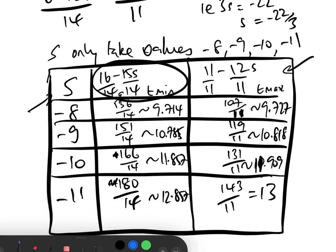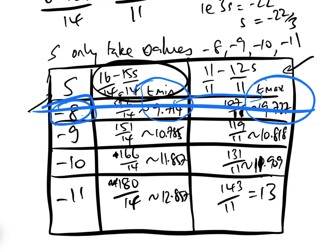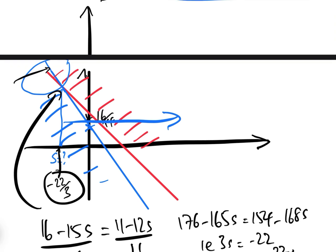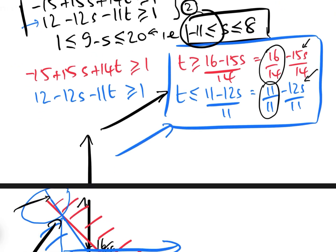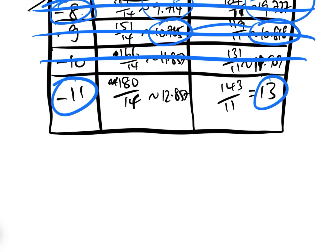The only value of s for which there is an integer value of t satisfying both constraints is s = −11 and t = 13. So that is our solution. Going all the way back: x = −15 + 15s + 14t, y = 12 − 12s − 11t, z = 9 − s.